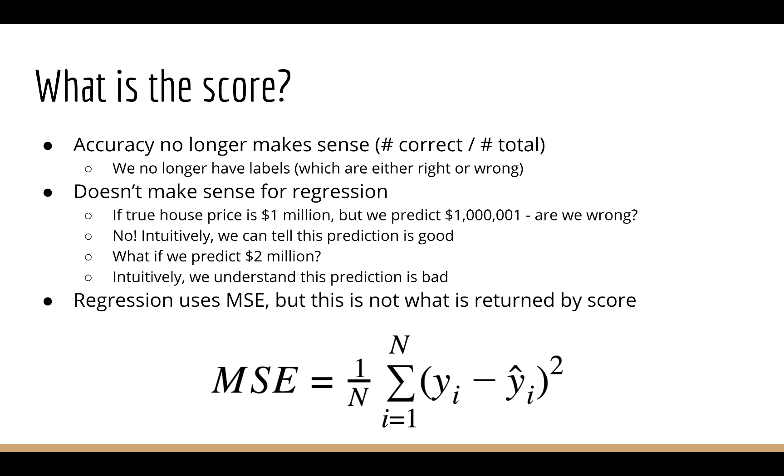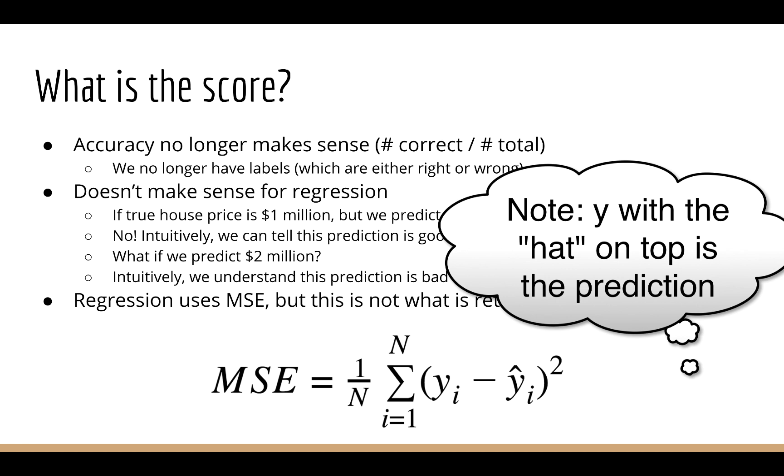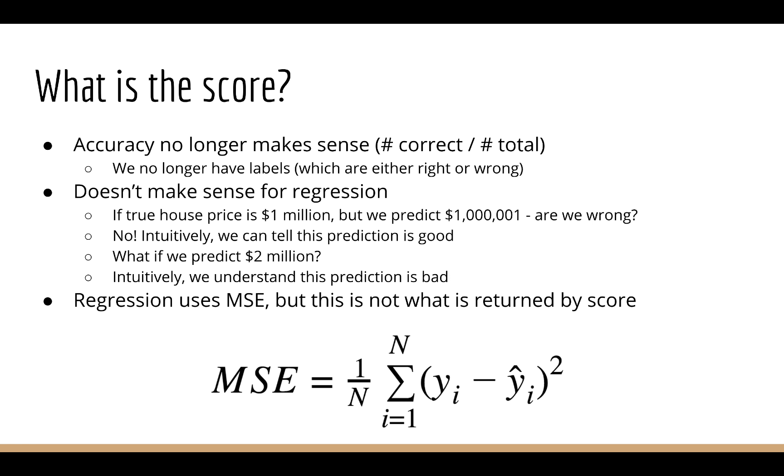So in general, one way to measure the performance of a regression model is to use the mean squared error. That means I take the square difference of every prediction and its corresponding target, and then I take the average of all those square differences. There are reasons we use the squared error over other different kinds of measures, but that's a topic for a later course.